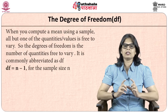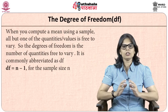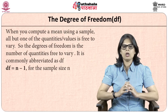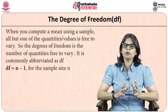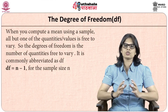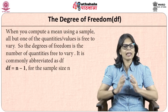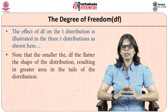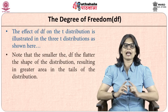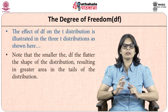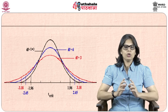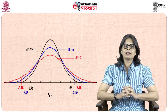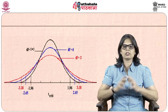The degrees of freedom refers to the number of instances which are free to change or vary. When you compute a mean using a sample, all but one of the instances is free to vary. It is usually denoted by df, and if n is your sample size, df equals n minus 1. The smaller the degrees of freedom, the flatter is the shape of the distribution, resulting in a greater area towards the tails.